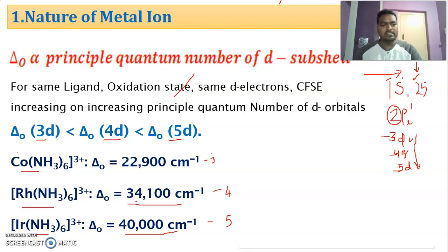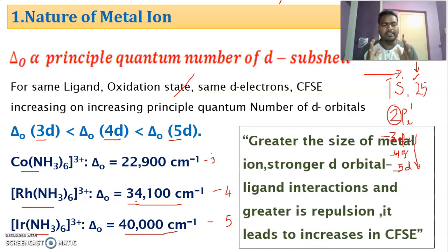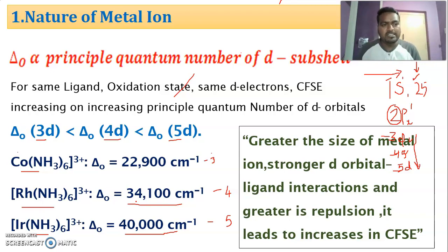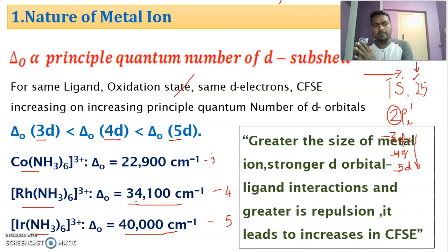Why does energy increase? Greater the size of the central metal atom, the d orbitals strongly interact with the ligand. If the size increases, the d orbitals are so closely near to the ligand orbitals, so the interaction between electrons of the ligand and the electrons of the metal ion is more — that is, repulsion is more. If repulsion is more, it increases crystal field stabilization energy. We are going to connect all factors to the repulsion taking place between the central metal atom and the ligand valence orbital.